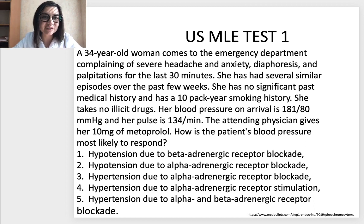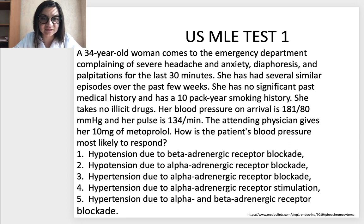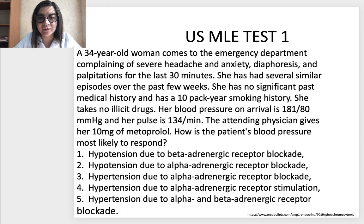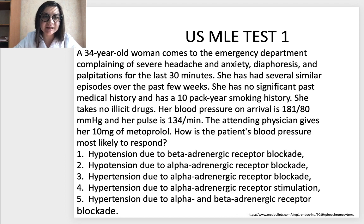Let's discuss. The first test: a 34-year-old woman comes to the emergency department complaining of severe headache and anxiety, diaphoresis and palpitations for the last 30 minutes. She has had several similar episodes over the past few weeks. She has no significant past medical history and has a 10-pack-year smoking history. She takes no illicit drugs. Her blood pressure on arrival is 181/80. Her pulse is 134 per minute. The attending physician gives her 10 mg metoprolol. How is the patient's blood pressure most likely to respond?